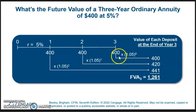In the third year, it's just $400 because that's when the calculation date is, the end of year three. Add those three up, and we get the future value of that annuity of $1,261.